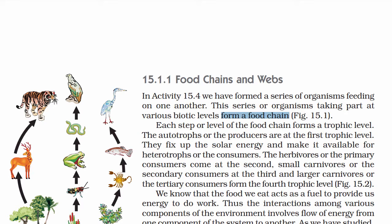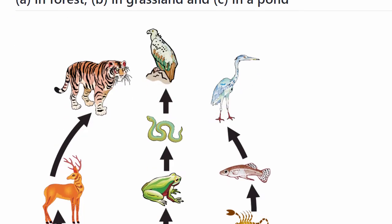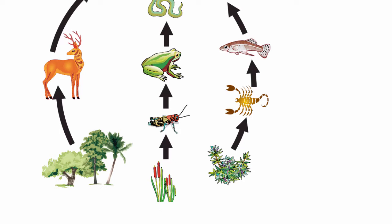If you look at three food chains, it will be detailed. Food chains exist in nature — in the forest, in grassland, and in a pond. In the forest food chain, a tiger feeds on deer, and the deer feeds on plants. This is one forest food chain.